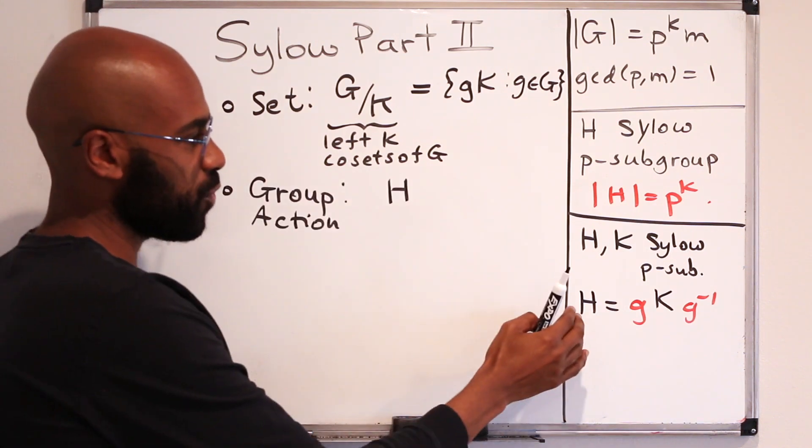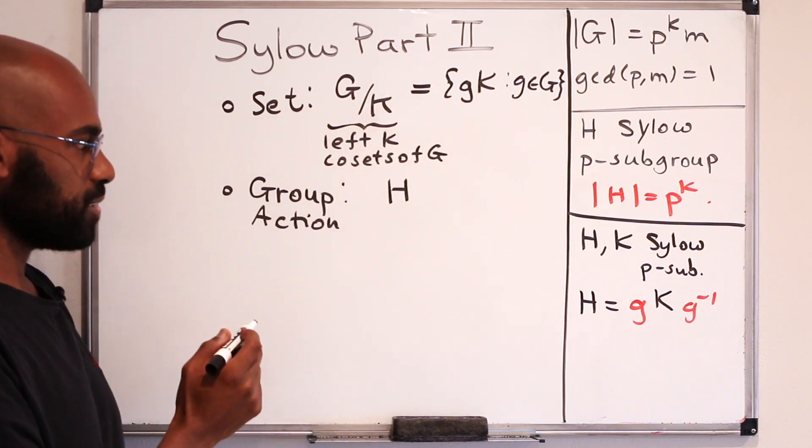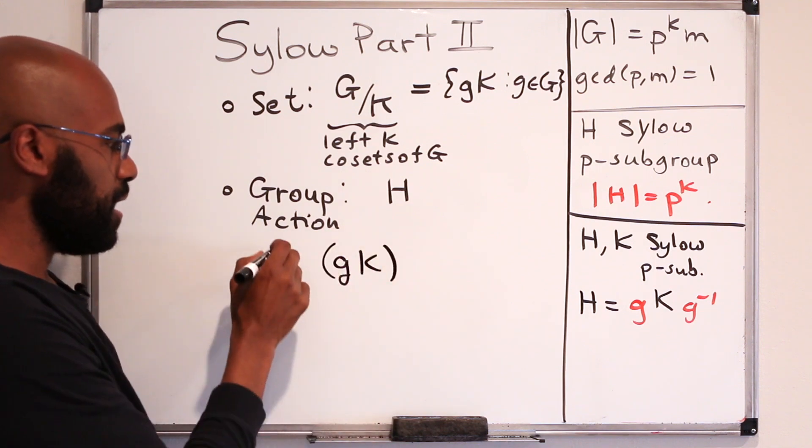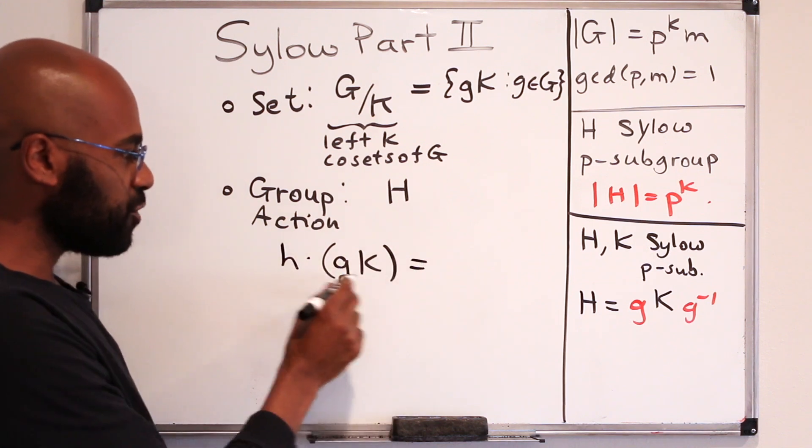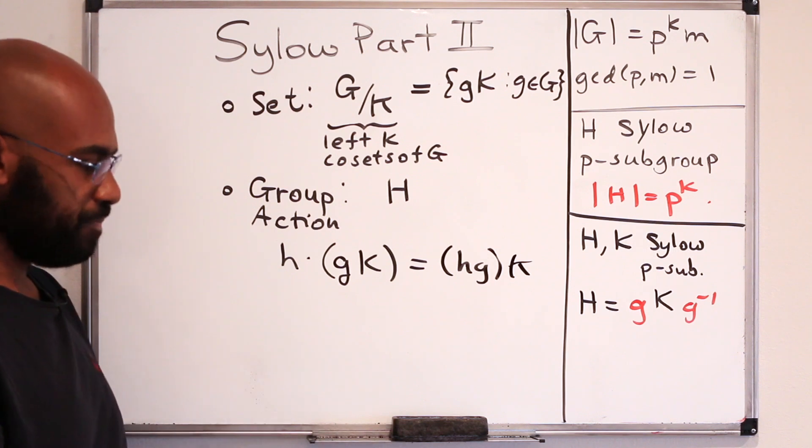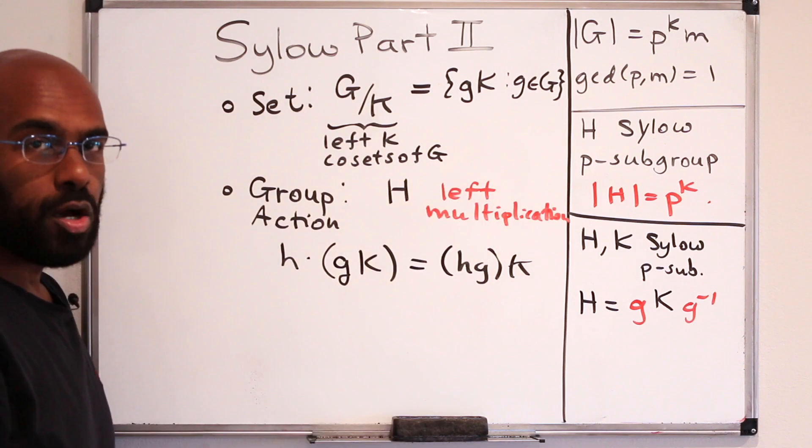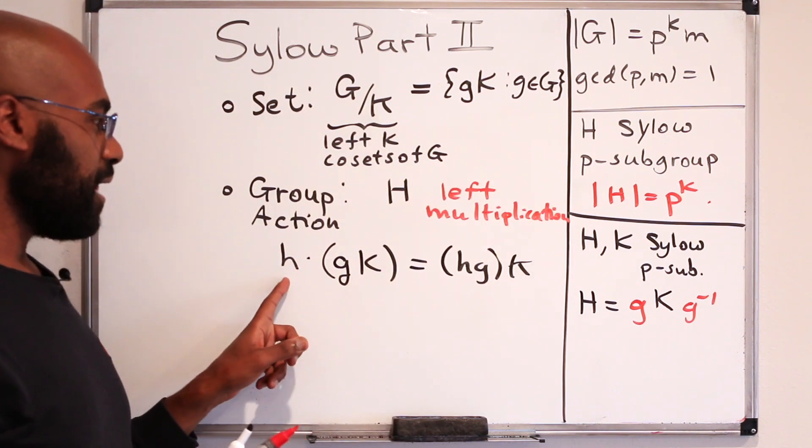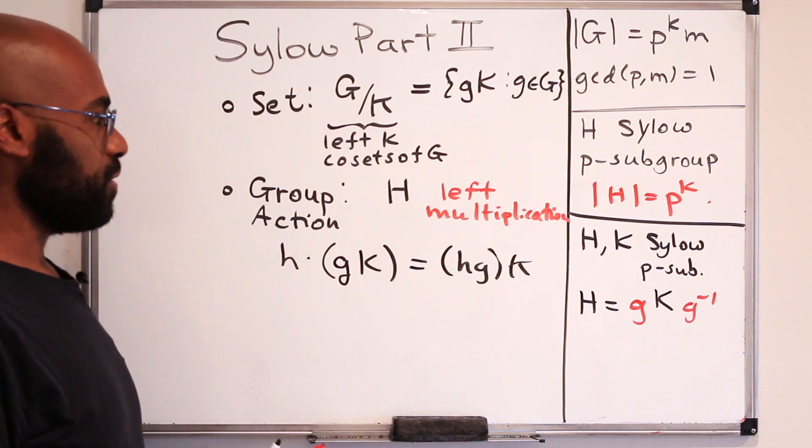Now, the group action is going to be the group H that we don't know much about, and it's going to act on these left K cosets. So when you have a particular left K coset G, K, H is going to, any element of H is going to do something to it. And a natural option here is multiplication of H and G in the group capital G. So this is going to be the action of left multiplication. Okay, so we actually need to check that this is an honest group action. First of all, if we take an element of H and act on a left K coset, the output is a left K coset, so that's good.